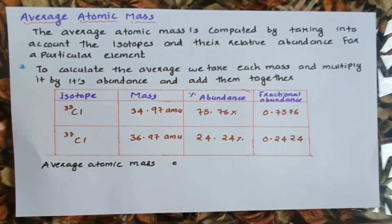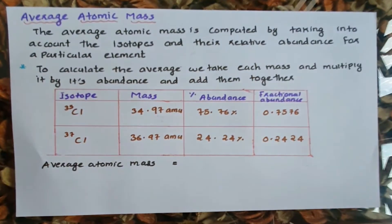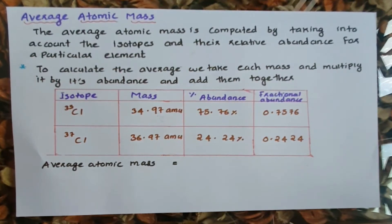For Chlorine-35 and Chlorine-37, we identify the relative abundance of each isotope. This fraction of abundance will be used to calculate the weighted average atomic mass of chlorine.